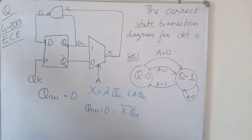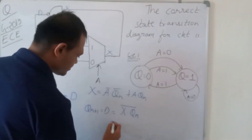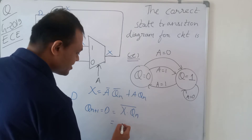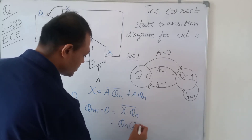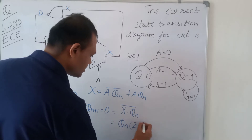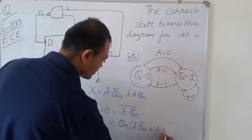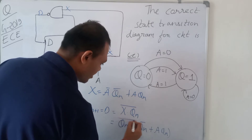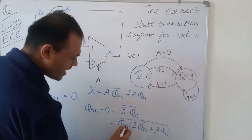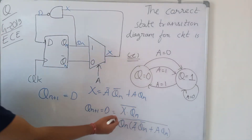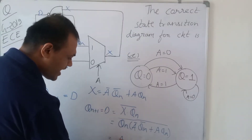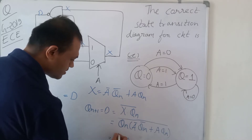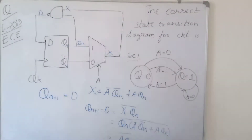Substituting X = ā·Qn̄ + a·Qn into (X·Qn)̄: the term ā·Qn̄·Qn = 0 since Qn·Qn̄ = 0, leaving Qn+1 = a·Qn̄. So the next state simplifies to a·Qn̄.